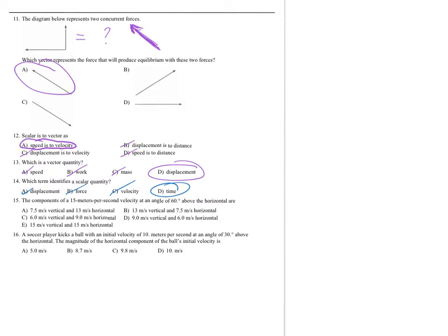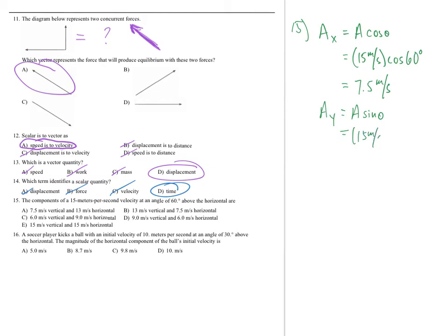Number fifteen: the components of a 15 meters per second velocity at an angle of 60 degrees above the horizontal. For the horizontal component (x): A·cos θ = 15 m/s × cos 60° = 15 × 0.5 = 7.5 meters per second. For the vertical component (y): A·sin θ = 15 m/s × sin 60° ≈ 15 × 0.866 ≈ 13 meters per second. The answer is choice B — be careful, it is not choice A, which is the reverse.